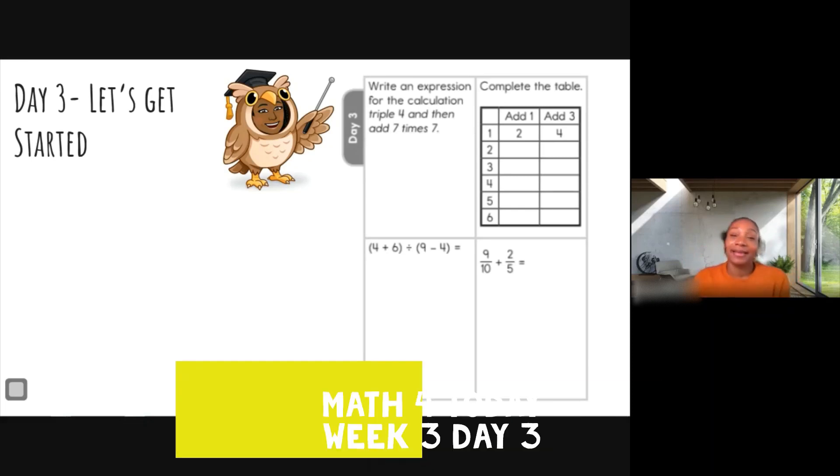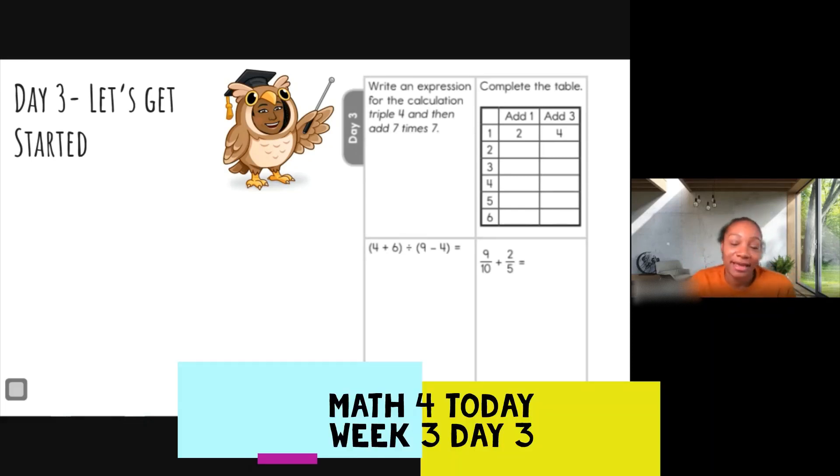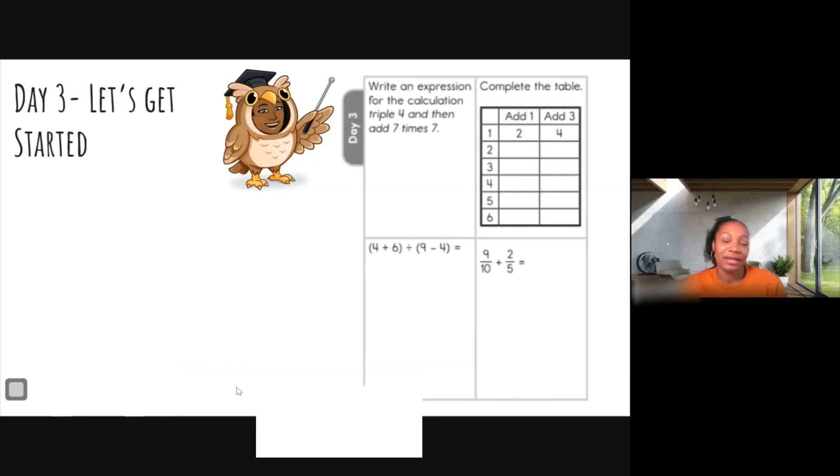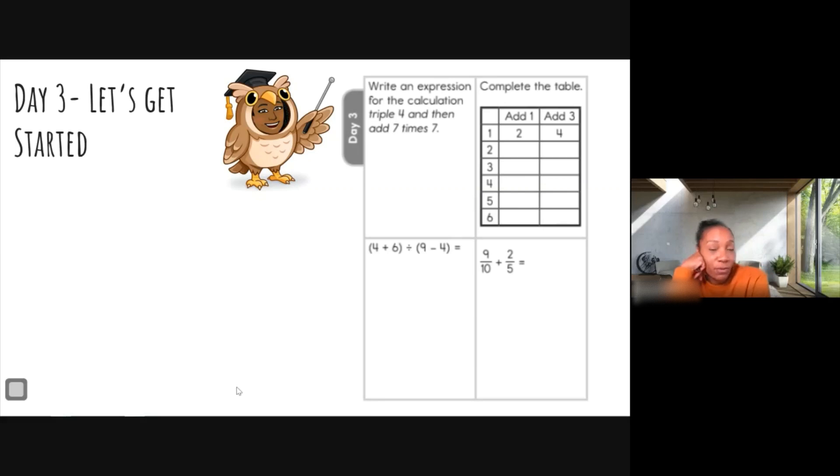Hello and welcome back to Math For Today. This is fifth grade's week three, day three. Let's go ahead and get started on number one. Number one says to write an expression for the calculation: triple four and then add seven times seven.